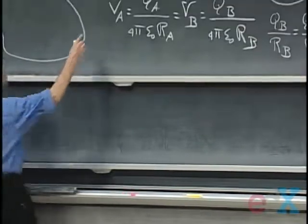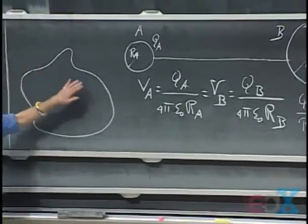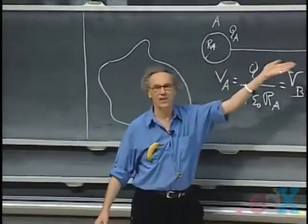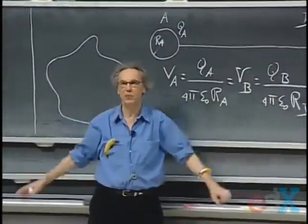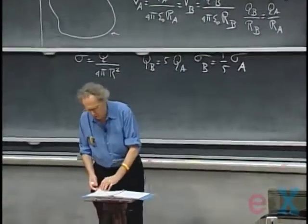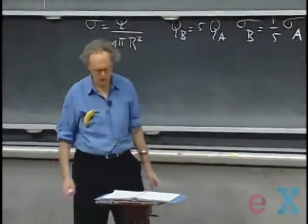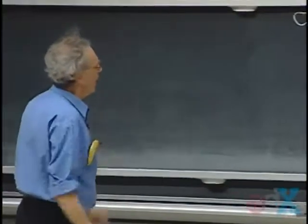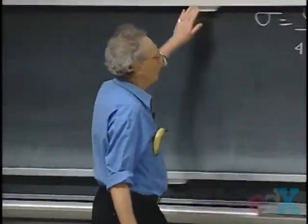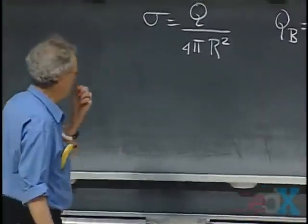So there is five times higher surface charge density at A than at B. This convinces us that for a solid conductor, the surface charge density will be larger where the radius of curvature is smaller. You expect the highest surface charge density where the curvature is highest — the smallest radius — and that means the electric field will also be stronger there.